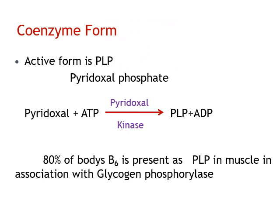The active form of vitamin B6 is known as pyridoxal phosphate. Pyridoxal phosphate is formed from phosphorylation of all three forms of vitamin B6 by the enzyme pyridoxal kinase. For example, pyridoxal plus ATP, in presence of pyridoxal kinase, leads to formation of pyridoxal phosphate. 80% of the body's B6 is present as pyridoxal phosphate in muscle, in association with glycogen phosphorylase, which requires pyridoxal phosphate as a coenzyme for glycogen metabolism.